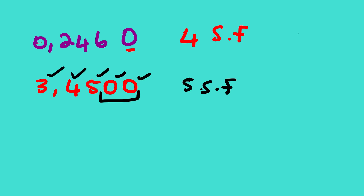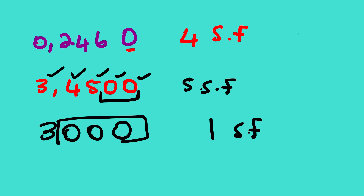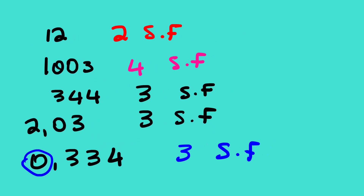To summarize: we only count zeros when they are in between two non-zero numbers. We count zeros when there is a decimal point and they are at the end of the number. We do not count zeros when the number has no decimal point and the zeros are at the end — for example, 3000 has only one significant figure. We also do not count zeros at the beginning of a number that has a decimal point.